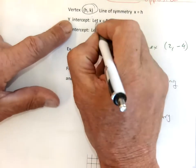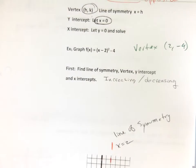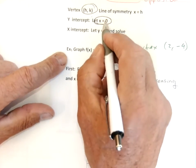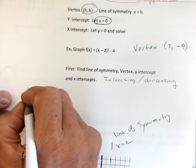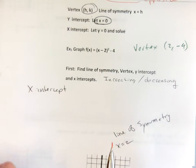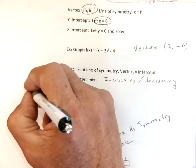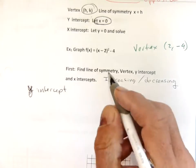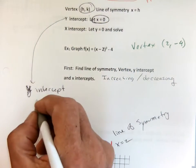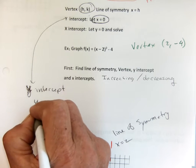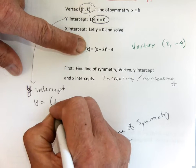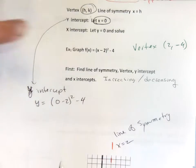Now, if I want the y-intercept, it says to let x equal 0. So I'm going to take my equation and let x equal 0. So y equals parentheses 0 minus 2, squared, minus 4.